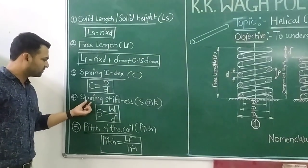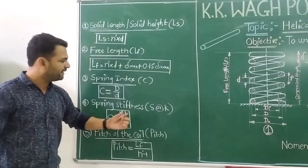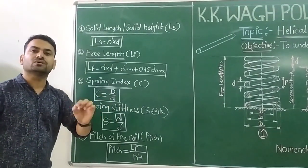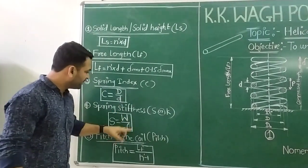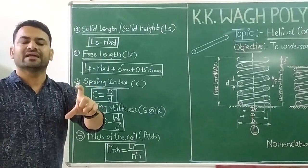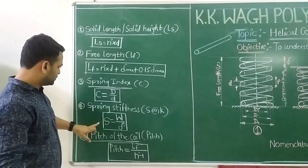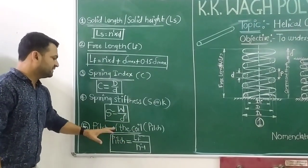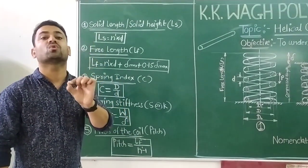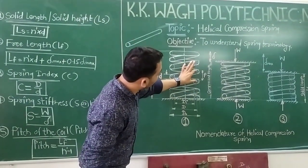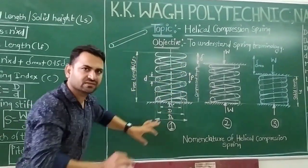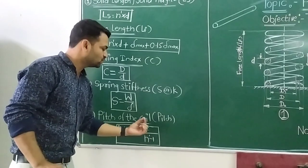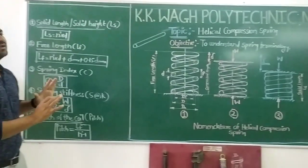Spring stiffness is denoted by S or K — another important element. Spring stiffness is the load required per unit deflection: S = W / δ. Finally, pitch of the coil is the distance between two successive coil points, calculated as: pitch = LF / (n' − 1), where n' is the total number of turns.